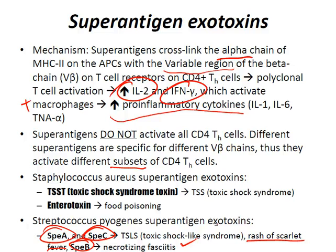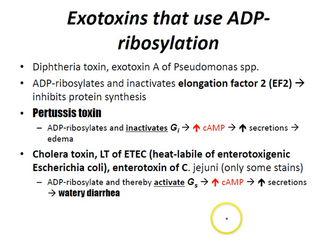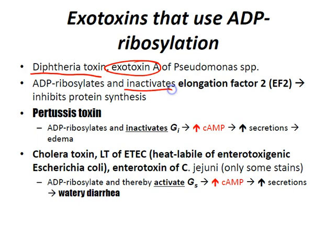Let's talk about exotoxins that use ADP ribosylation. Diphtheria toxin and exotoxin A of the Pseudomonas species both ADP ribosylate and inactivate elongation factor 2, which inhibits protein synthesis.